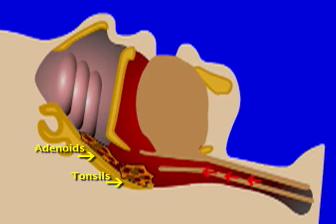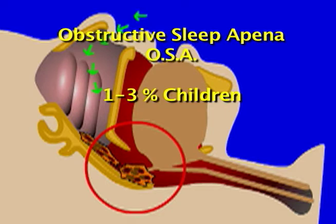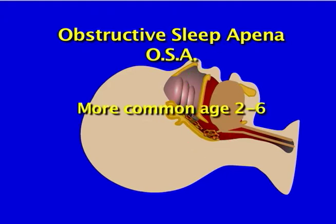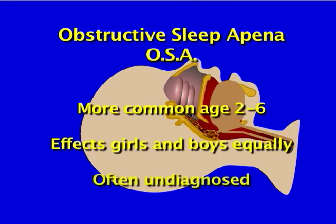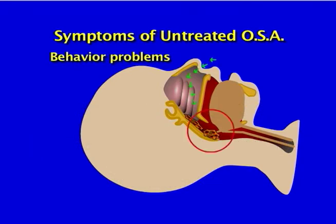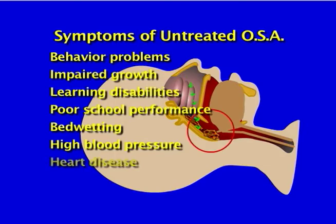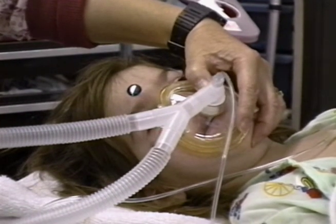The nasal passages of older children are often filled with adenoidal tissue. Hypertrophied adenoids and tonsils can fill the dead space in the back of the pharynx, making assisted ventilation more difficult. It's currently estimated that 1 to 3 percent of children suffer from obstructive sleep apnea, or OSA, a condition more often thought of as an adult disorder. OSA is now the most common reason tonsils and adenoids are removed in children. Pediatric sleep apnea typically appears between the ages of 2 to 6, but it can occur from infancy to adolescence. It's believed to affect girls and boys equally, and it's often undiagnosed. Untreated obstructive sleep apnea in children has been linked to behavior problems, impaired growth, learning disabilities, poor school performance, bedwetting, high blood pressure, and heart disease. Understandably, airway management can be more challenging when such a child loses consciousness or develops airway obstruction from other causes.